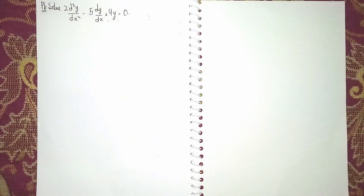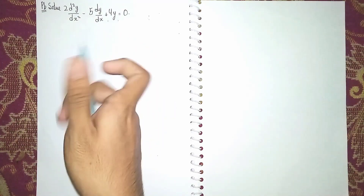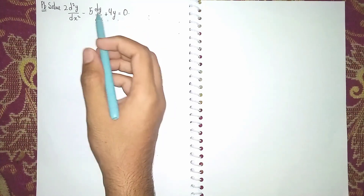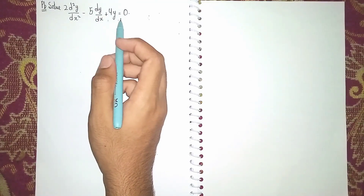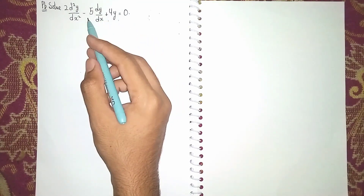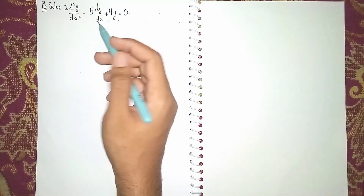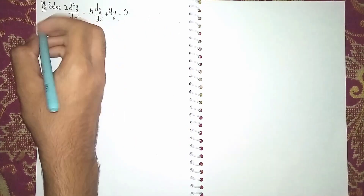Hello children, welcome back to my channel. The equation is 2x squared, 2 into d squared y by dx squared minus 5 into dy by dx plus 4y is equal to 0. It is a homogeneous linear differential equation, so let's find the solution.